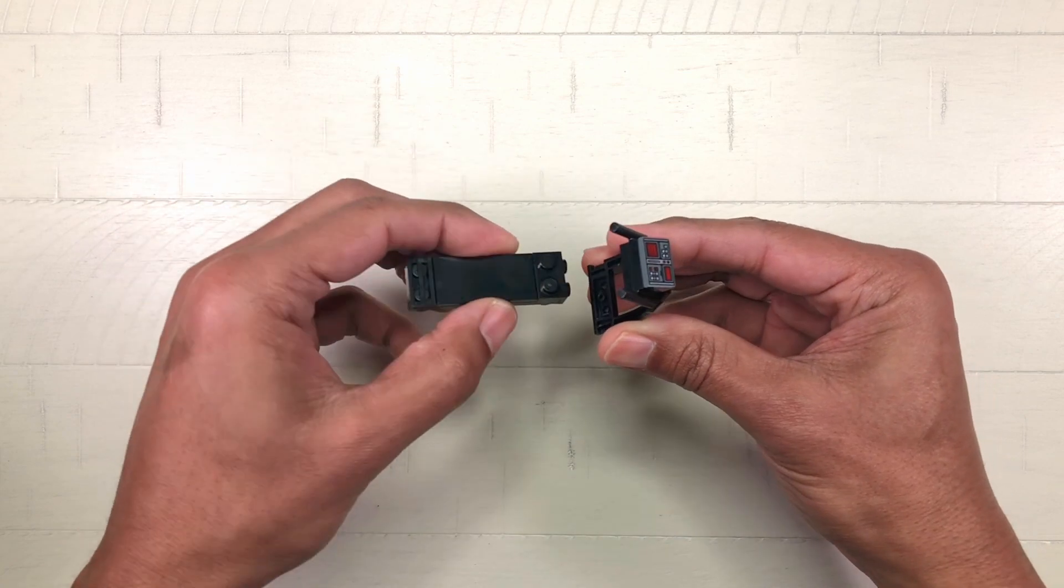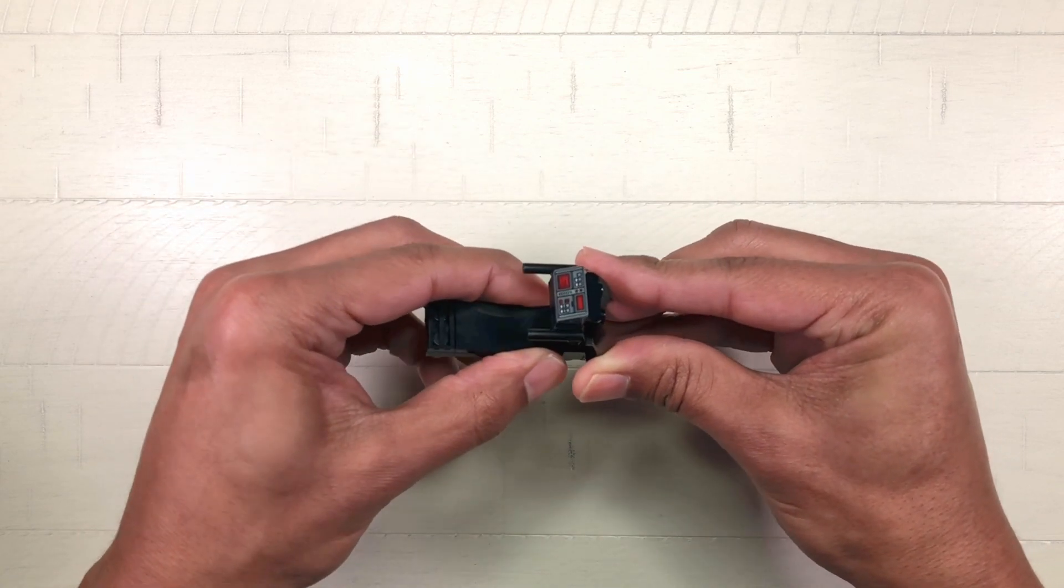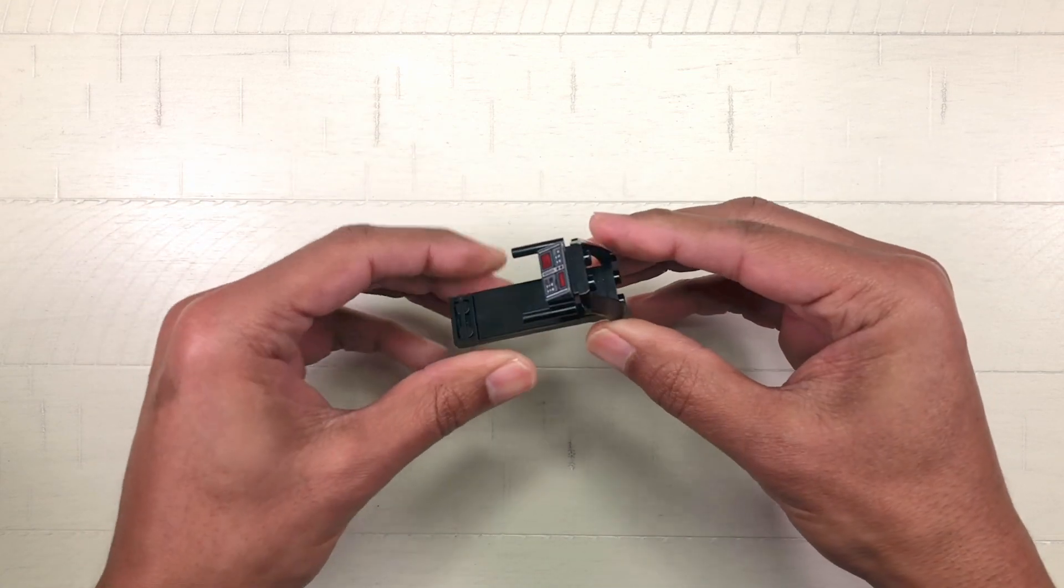Grab the previous two by six build and attach the bracket one by two to the bottom of the wedge four by three.